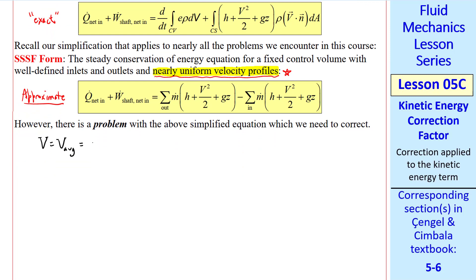We let v be the average speed at an inlet or outlet. Let's look at an outlet as an example. This is a nearly uniform velocity profile, but the actual profile may look something like this, where the average velocity is somewhere here. The problem occurs because of this v² term in the integral.